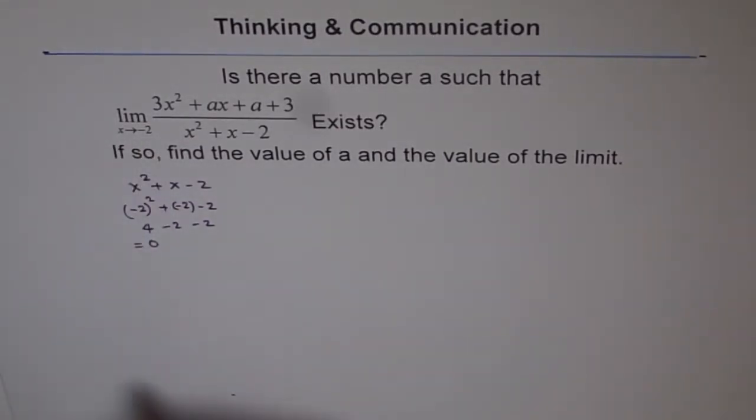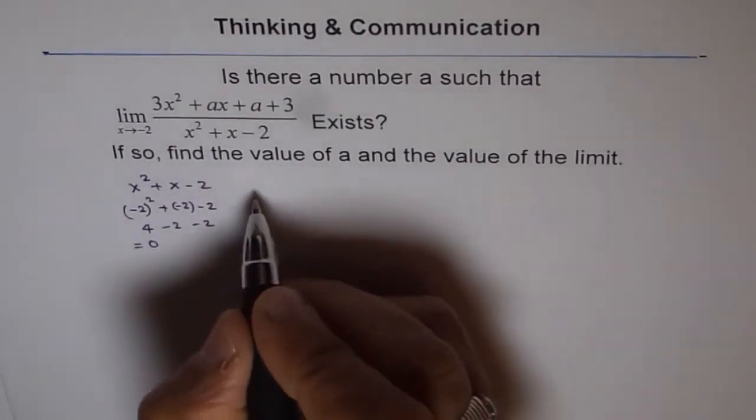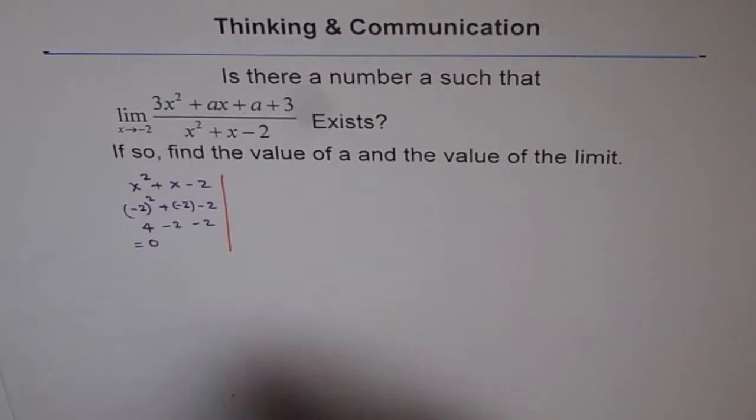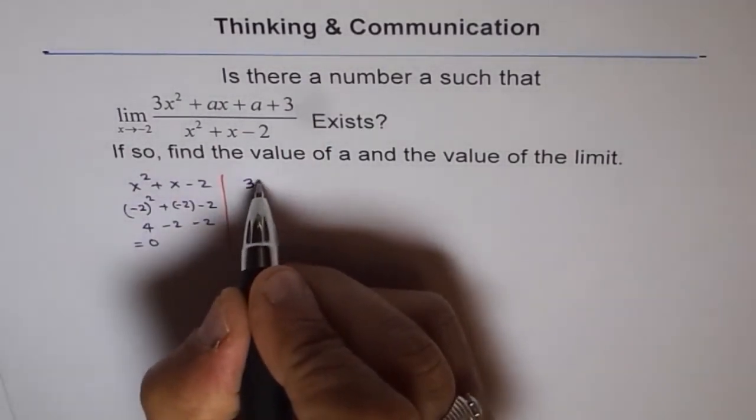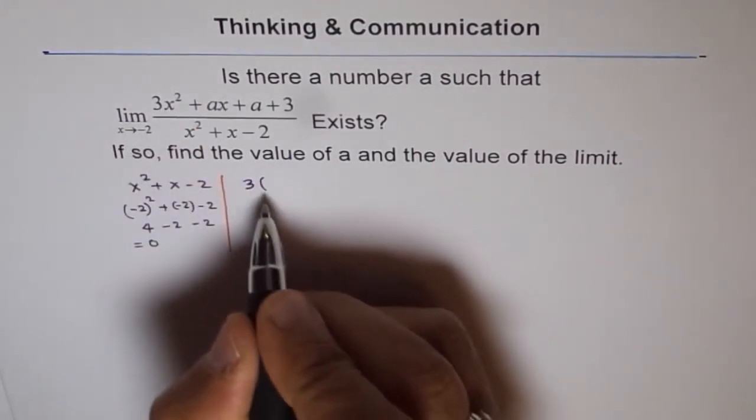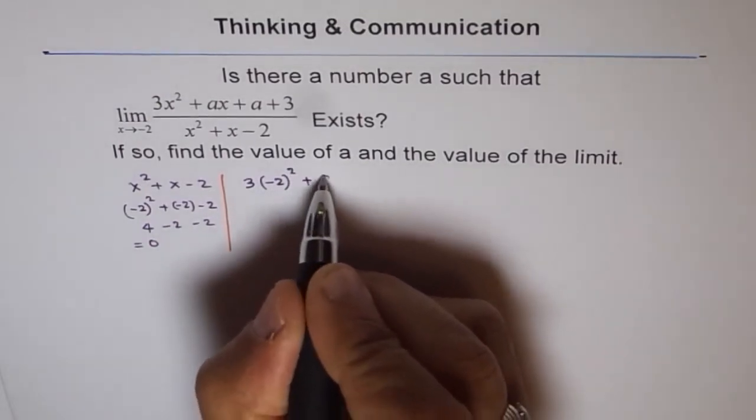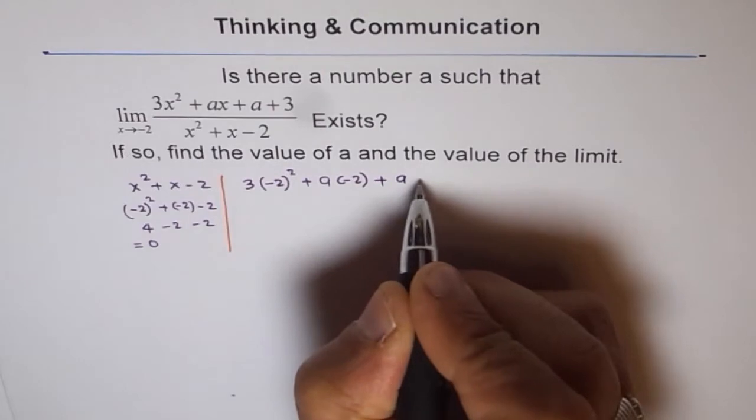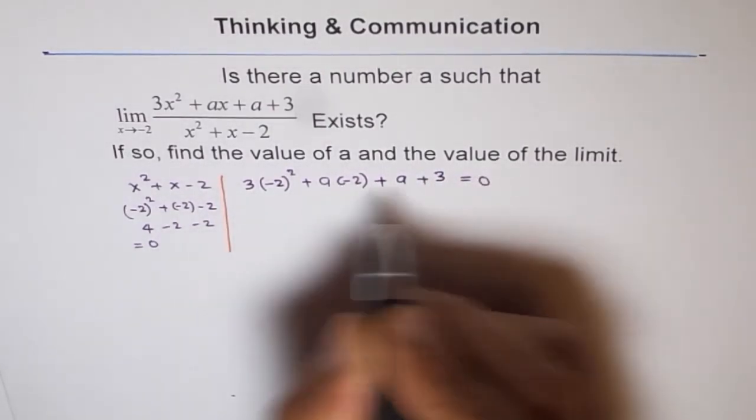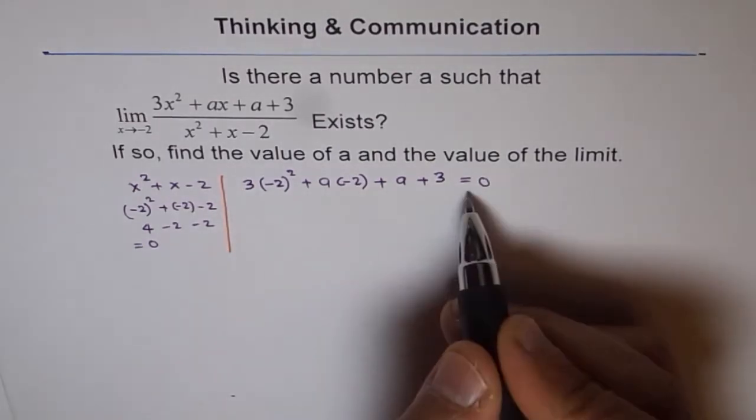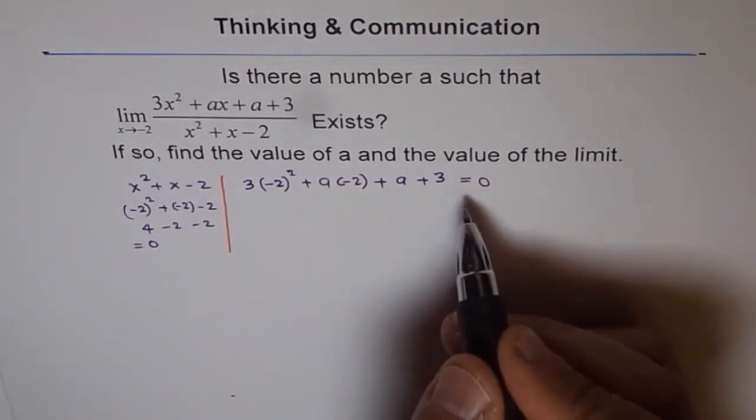So, that is what we will do now. In the numerator, now we will write x as minus 2 and equate it to 0. So, we get 3 times minus 2 square plus a times minus 2 plus a plus 3 and that should be 0. If that is 0, then we can find the value of a and that value of a will give us a factor of x plus 2 in the numerator.